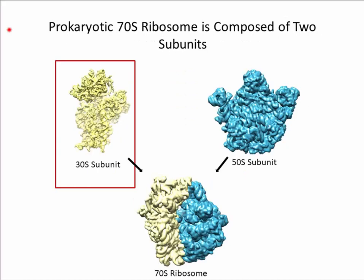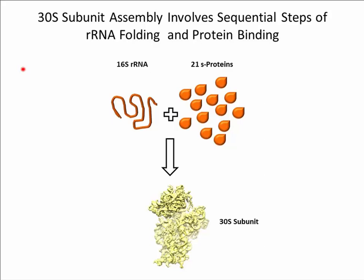The prokaryotic 70S ribosome is composed of two subunits termed the 30S and the 50S subunit. These two subunits are manufactured independently within the cell and ultimately associate to form functional 70S ribosomes. The function of the 30S subunit is to facilitate decoding of the mRNA message by codon anti-codon base pairing during translation, and the role of the 50S subunit is to catalyze the formation of peptide bonds. Today I'll be focusing primarily on the 30S subunit.